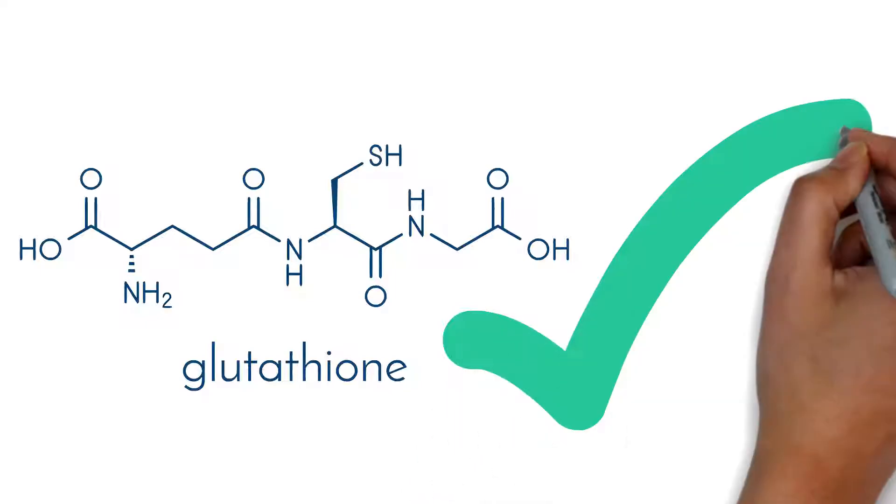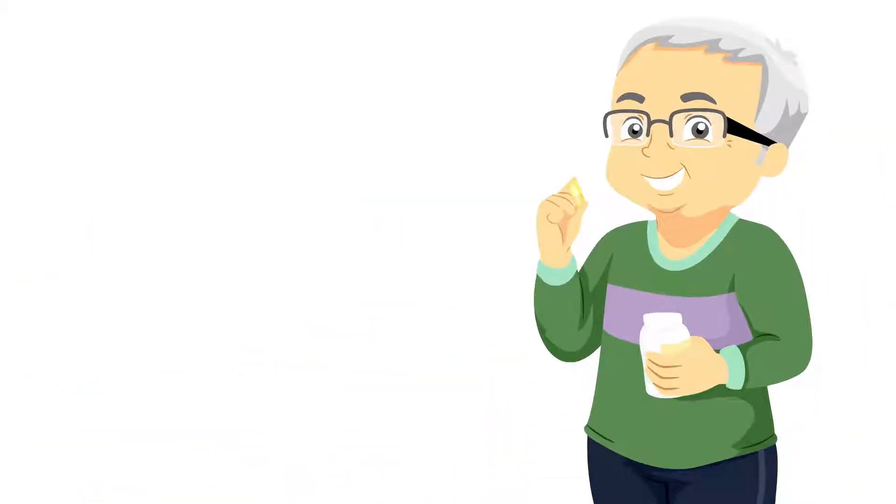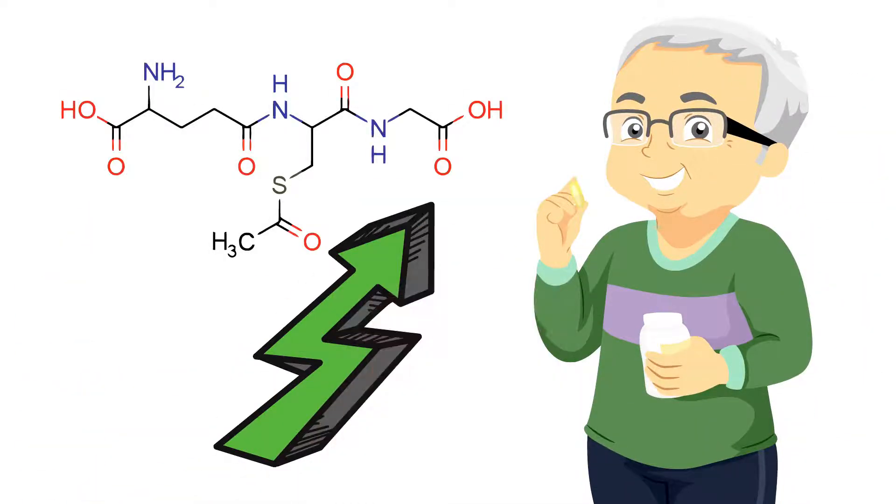Glutathione helps protect tissue from damage. Taking S-acetyl glutathione helps increase the level of glutathione in the cells.